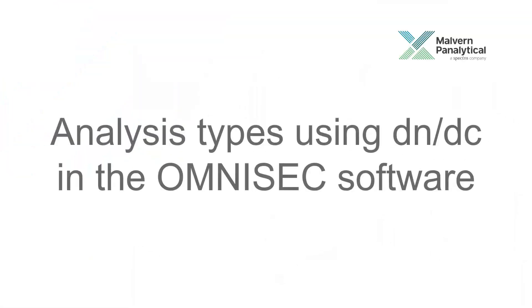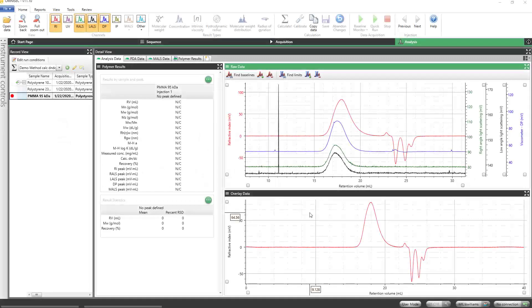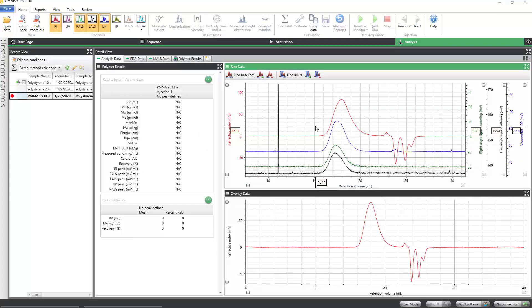Analysis Types Using DNDC In the Omnisec Software. When using the Omnisec software to determine absolute molecular weight, there are multiple analysis type options from which to choose.